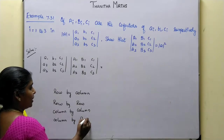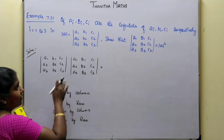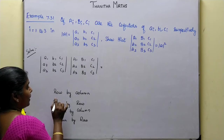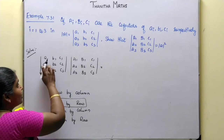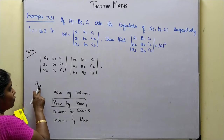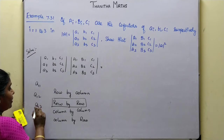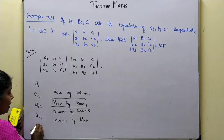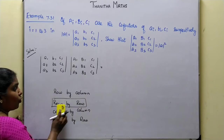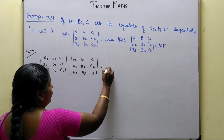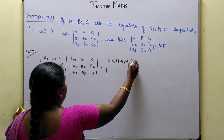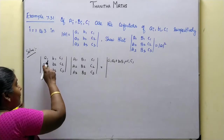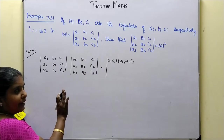We can multiply by row by row and column by column method, or column by row method. If you use any method, the answer is correct. We will use the row by row method. So multiplying row by row: A1 + B1 + C1 − C1. If we have the second element, we multiply row by row.